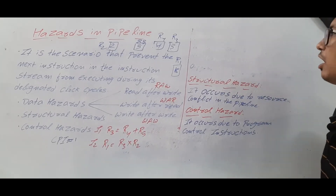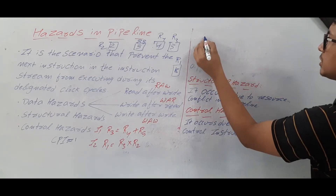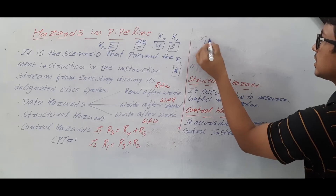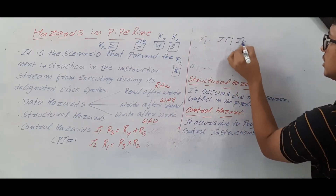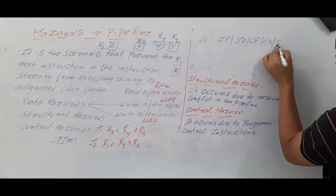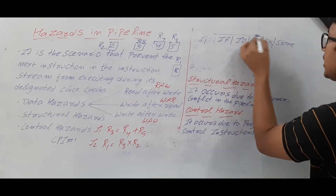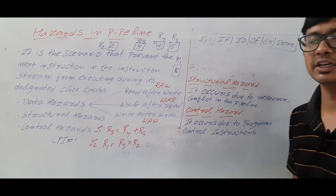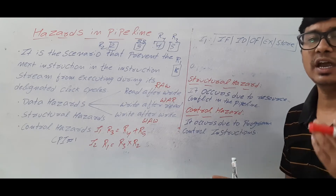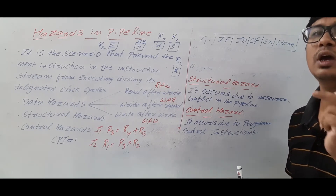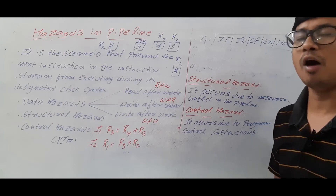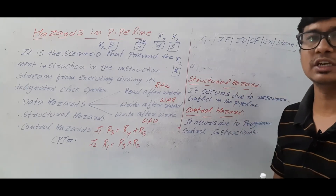Now let's see how these instructions execute in a five-stage pipeline: Instruction Fetch (IF), Instruction Decode (ID), Operand Fetch (OF), Execute (EX), and Write Back (Store). During IF we fetch the instruction from memory; during ID we decode the opcode and identify operands; during OF we fetch operand values; during EX we perform the operation; and during Write Back we store the result back to the register.